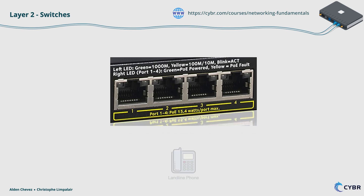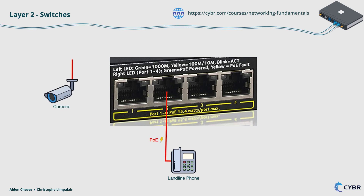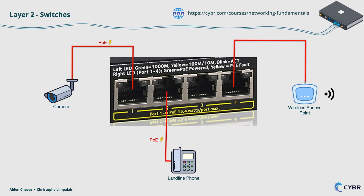Some examples of using PoE would be for things like phones, cameras, or even wireless access points, which may not need a lot of power to function — we can plug them in directly to those ports instead of needing a separate power supply.